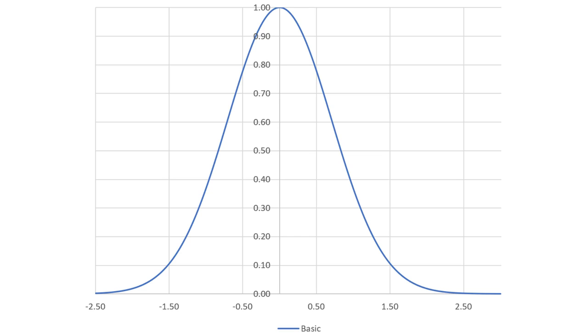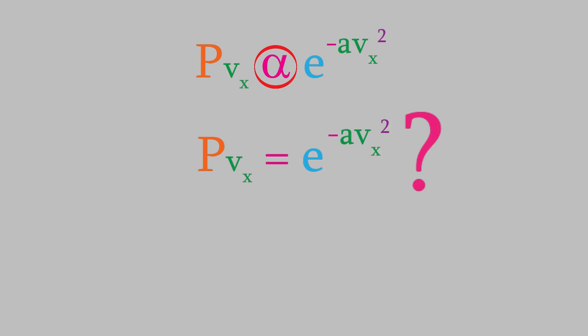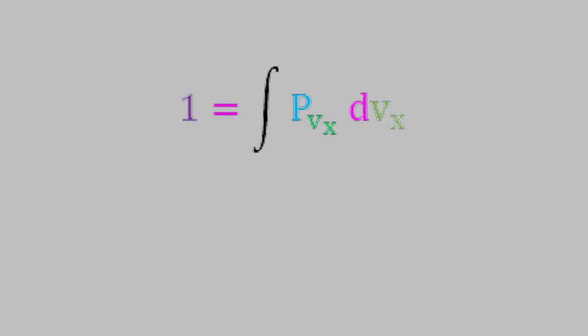Let's think about what the y-axis of these plots means. This axis represents a relative probability that a molecule will have a velocity described on the x-axis. We can write that as an equation this way: the probability that a molecule will have a velocity vx is proportional to the exponential term we've been looking at. But why is the probability proportional to that term and not equal to it? The reason is that the probabilities for each velocity must add up to one. If we use an equal sign, we're saying that the amplitude is equal to one, which means that the height of the curve would be one, but that can't be correct.